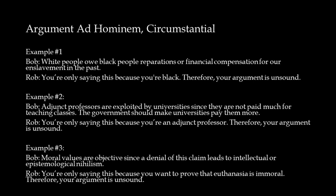Another version of the ad hominem fallacy is circumstantial. This is where we dismiss an argument because of someone's personal circumstances or that person's affiliation with some group. For example: White people owe black people reparations or financial compensation for our enslavement in the past. The fact that the person making this argument is black is irrelevant to whether or not we should give black people reparations for being enslaved in the past. So this is just not a good way to dismiss one's argument.